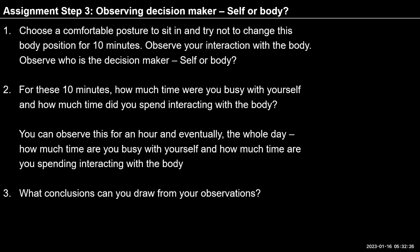In step 3, we were trying to see who is the decision maker in this interaction between the self and the body. We tried to see that it is the self that is deciding what information to give to the body, what instruction to give to the body, and when to give it. And in the body, due to the various activities going on, many sensations are there. The self is choosing to read some of those sensations as and when it thinks important, gives some meaning to them, comes to some decision, and then instructs the body to do something.